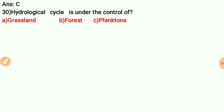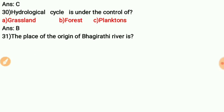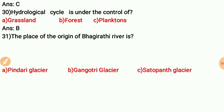The hydrological cycle, also known as the water cycle, is controlled by forests. When forest area is more, the water cycle functions well; if forest cover decreases, the water cycle is negatively affected.